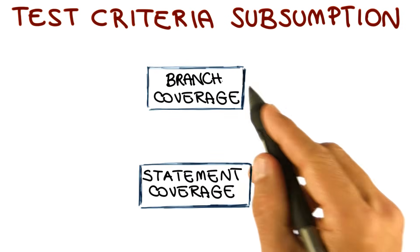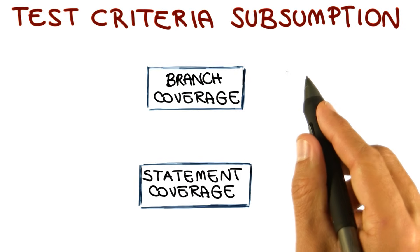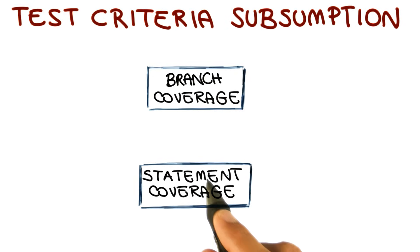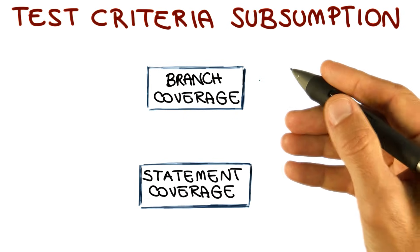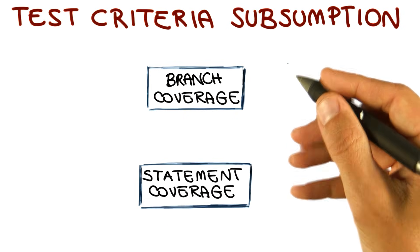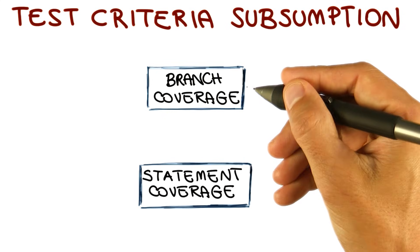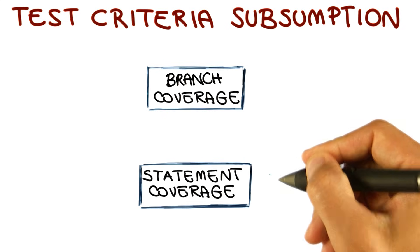If we identify a test suite that achieves 100% branch coverage, the same test suite will also achieve necessarily 100% statement coverage. That's what happened for our example, and also what happens in general, because branch coverage is a stronger criterion than statement coverage. There is no way to cover all the branches without covering all the statements.